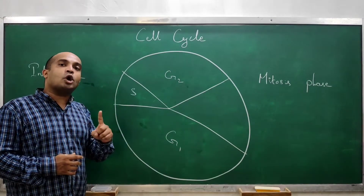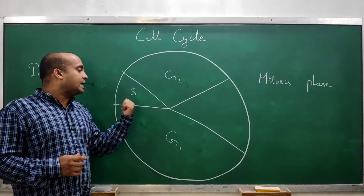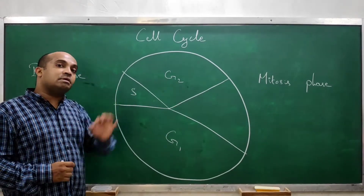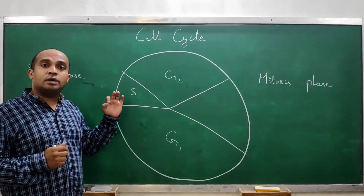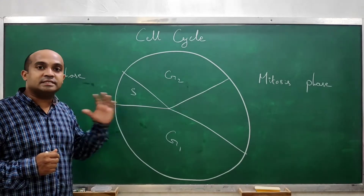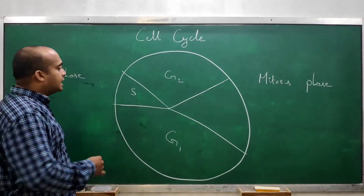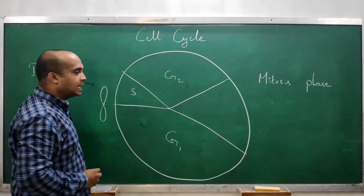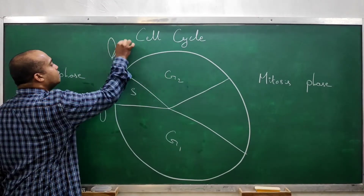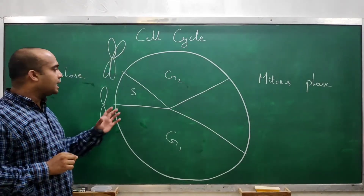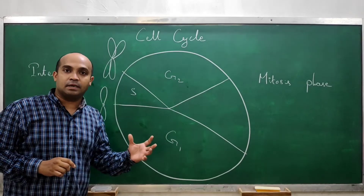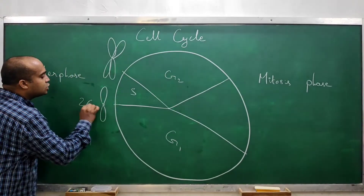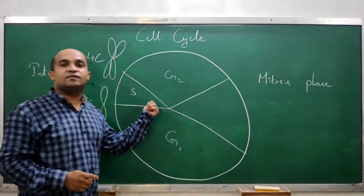In S phase, duplication of the DNA molecule is occurring. At the beginning of S phase there is only one copy of DNA, but by the end of S phase there are two copies of DNA molecules. Just remember that there is no doubling of chromosome numbers — the number of chromosomes remains the same, but DNA content becomes double. At the beginning of S phase chromosomes are 2C, and by the end of S phase chromosomes are 4C. So DNA content doubles in each chromosome, but the number of chromosomes does not change — the mass of chromosomes doubles.